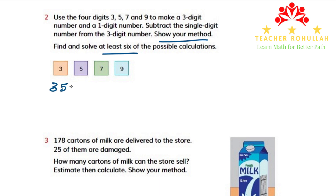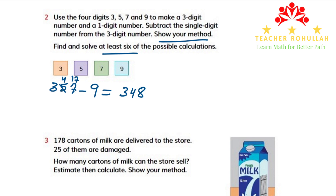The first calculation is 357 minus 9. We know that 9 is in the ones place. We have to subtract 9 from the ones place but don't have enough, so we borrow from the tens place. 5 becomes 4, and 7 becomes 17. 17 minus 9 is 8, 4 minus nothing is 4, and 3 minus nothing is 3. So 357 minus 9 equals 348.